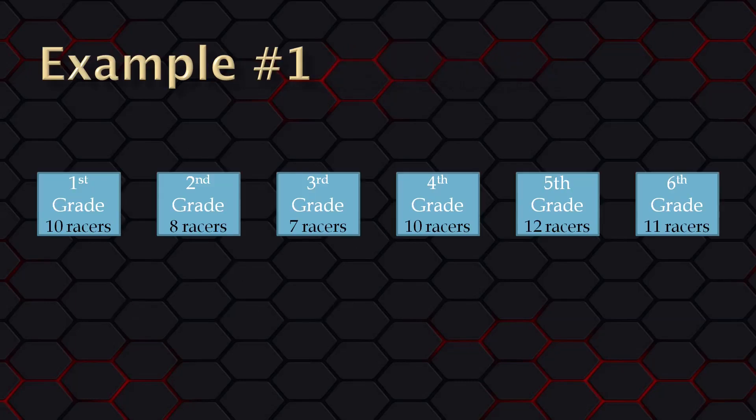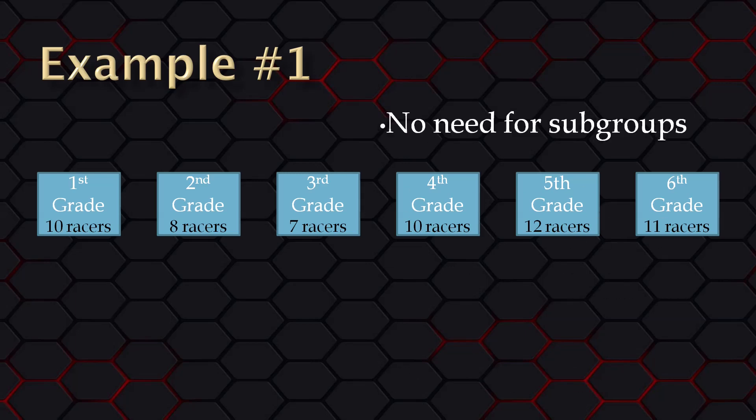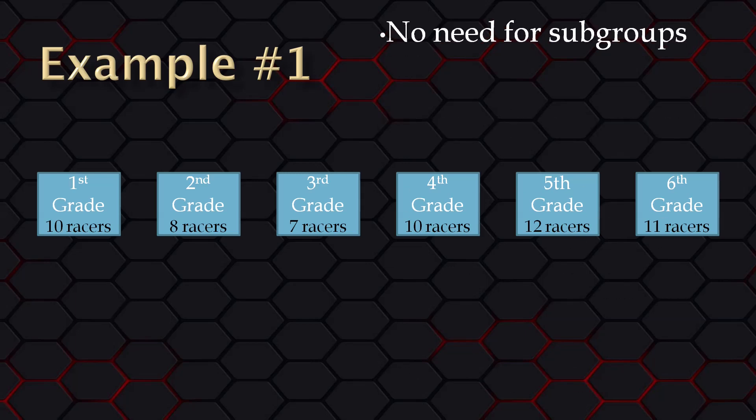It might make things more clear to show you some examples — these are all based on a race for an elementary school. In our first example, we have each grade level listed along with the number of racers. Each grade level has a reasonable number of racers, so there would be no issues with making each grade level be their own competition group. In this scenario, there is no need for subgroups, and you can score by either times or points.